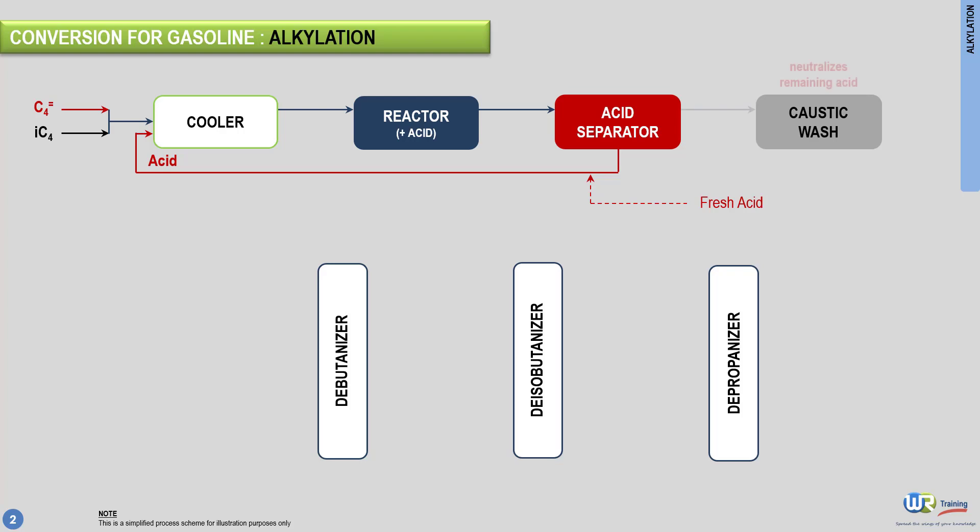Finally, three standard fractionation columns separate the alkylate from light products. The alkylate is recovered at the bottom of the debutanizer and, as seen earlier, is a good blending component for gasoline. So the alkylate is sent to the blending section of the refinery for gasoline making.